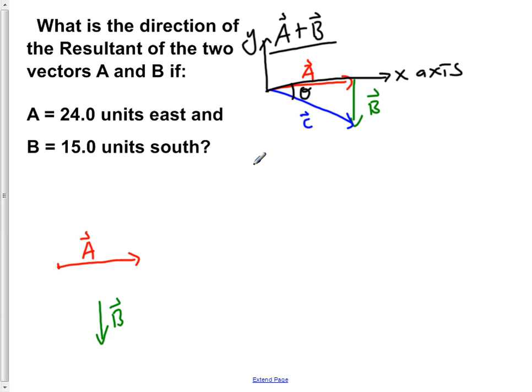So using SOHCAHTOA, we find that tan of theta, this would be the easier one. You can use sine or cosine but in doing so you would also have to determine the value of C, its magnitude. So we're just going to go off the basis of what we're given which is A and B. So we're going to use tan of theta is equal to the opposite over the adjacent.